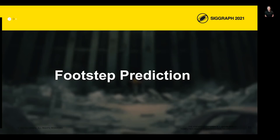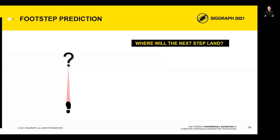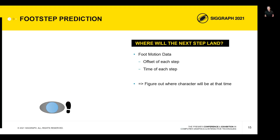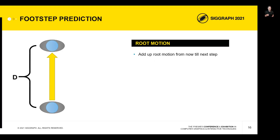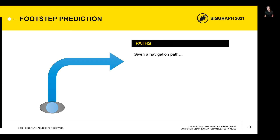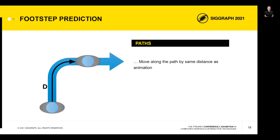Once we had a system to move feet where we needed to, we had to figure out where we actually wanted to move them. To find where the foot is going to be, we really need to know where the character is going to be, since the foot motion data gives us an offset relative to the character when the foot lands. Using the foot motion data, we look up the time in the animation when the foot will next be on the ground, then calculate how much the character will move between now and that point using root motion. We'd walk that same distance along the navigation path to find the target location.